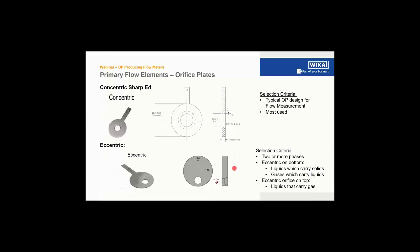The most widely used orifice plate is the concentric sharp-edged orifice plate. It has a sharp edge on the inlet, a small straight area called the bore land — which changes with the size of the orifice plate — and a bore on the outlet to cause as little disturbance with the vena contracta as possible. For special measurement applications, the flow bore can be moved out of the center, creating an eccentric orifice plate.